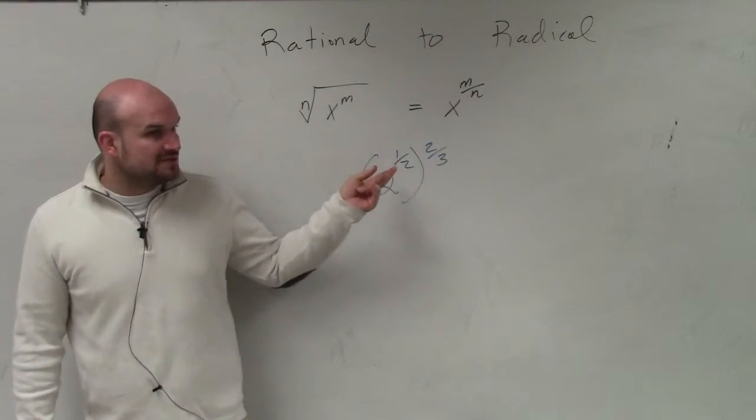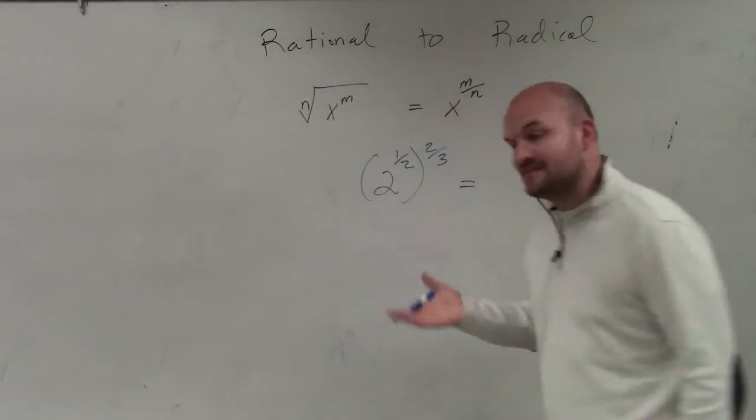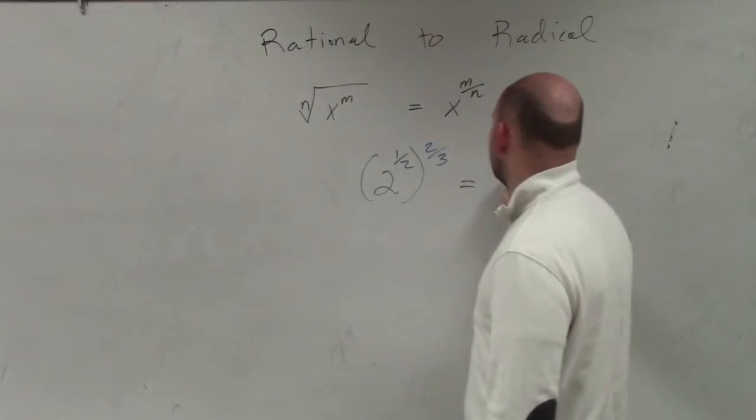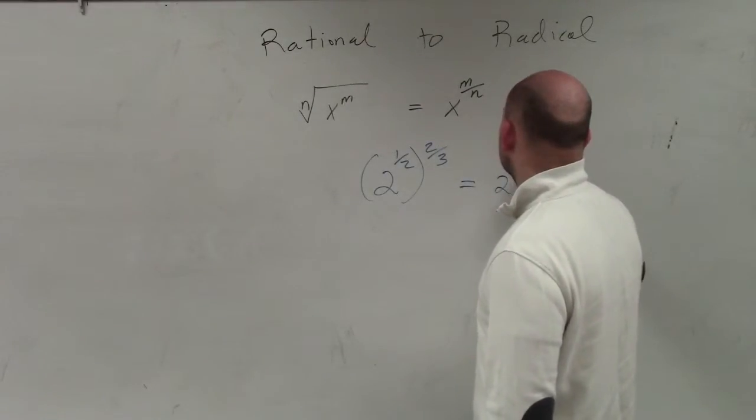Here I have one-half times two-thirds. When I multiply them, they do not have to have the same base—that's for adding and subtracting fractions. I'm going to multiply across, so I'm going to have 2 to the two-sixths.